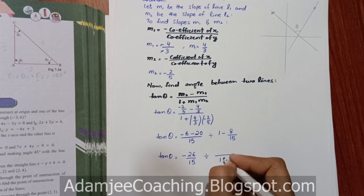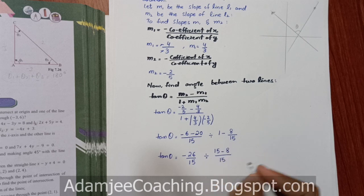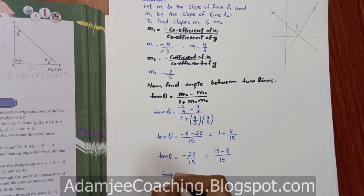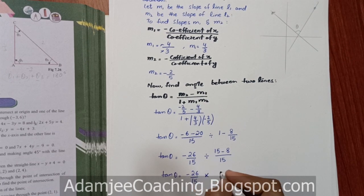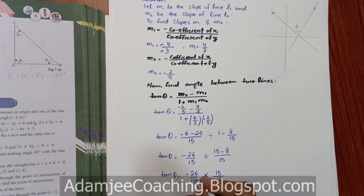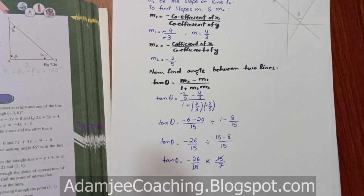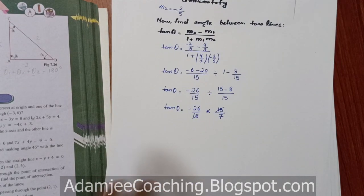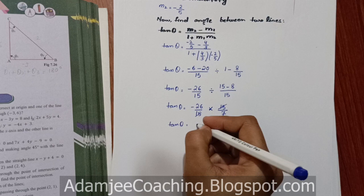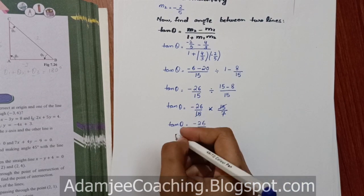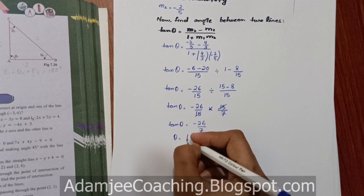Divide ki sign, 15 LCM aa gaya, 1 x 15 se 15 minus 8. Tan theta equals to minus 26 upon 15. Divide ki sign ko multiply mein badla, 15 upar gaya, 15 minus 8 kiya to bacha 7. Aur 15 se 15 cancel ho gaya, 26 divided by 7.